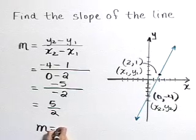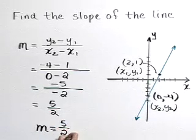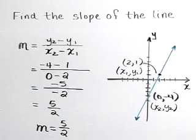So we can say that the slope of this line pictured that goes through the points (2, 1) and (0, -4) is 5/2.